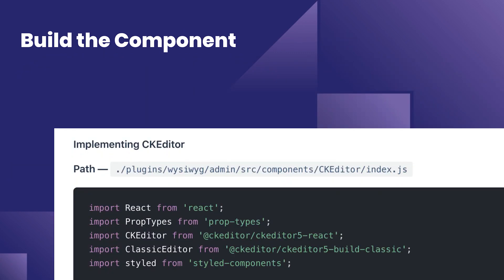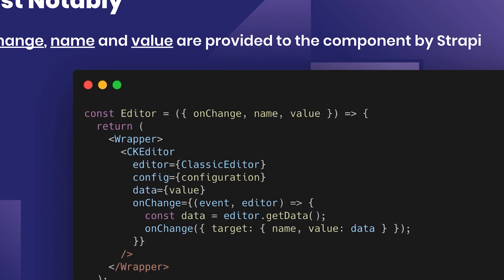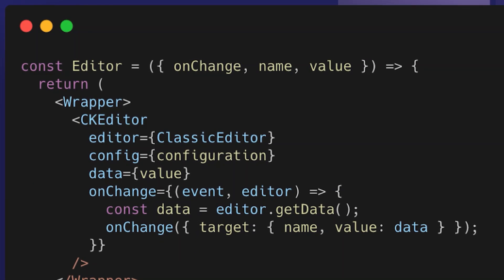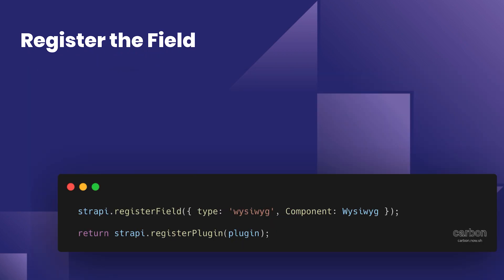We're going to build a visual React component that will receive three parameters as properties directly from Strapi. These are: `onChange`, which is the handler we call whenever the input changes; `name`, the name of our field; and `value`, the current value of the field. When we call `onChange`, we pass an object with a `target` containing the `name` and `value`.